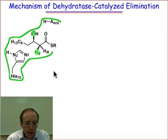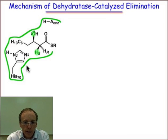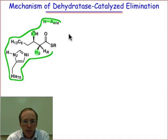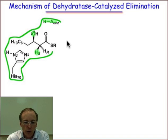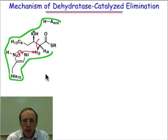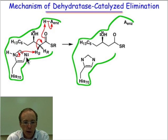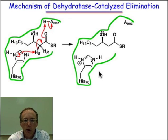In the active site, there's a histidine 70 which performs the function of a base. There's also an unknown enzyme residue that serves as an acid in a general acid-general base catalyzed process. The elimination of that pro-S hydrogen involves deprotonation using the sp2 nitrogen of the imidazole ring of histidine 70, which puts the histidine ring in its protonated form.